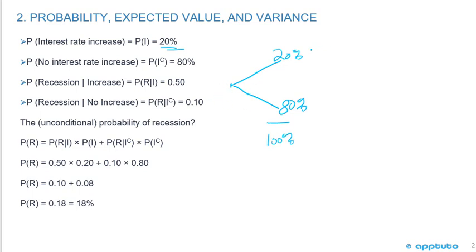So if there's a rate increase, there's a probability of a recession of 50%, which means the probability of no recession given the rate increase is also going to be 50% because that's going to add up to 100%.